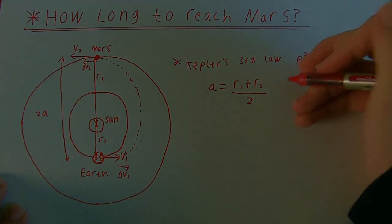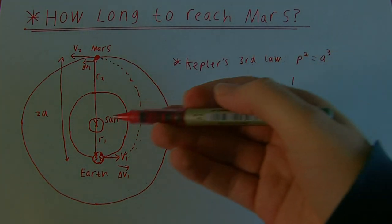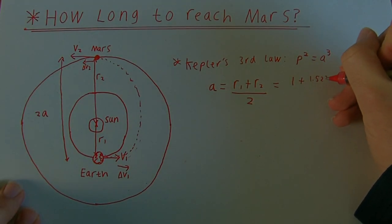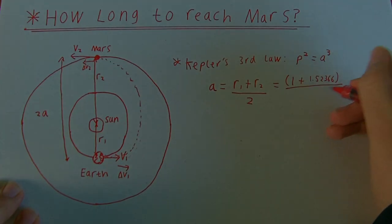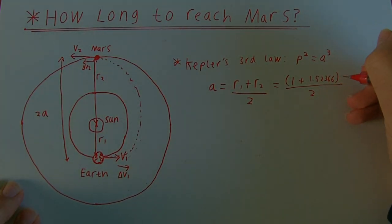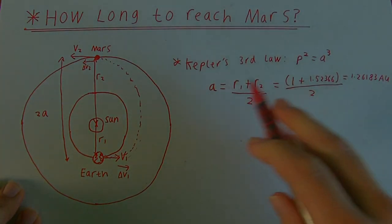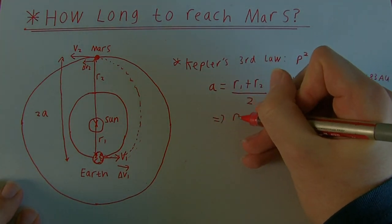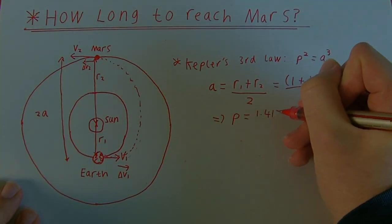Remember this is measured in astronomical units. The distance between the Sun and the Earth is 1 astronomical unit, plus 1.52366 astronomical units — the distance between the Sun and Mars — divided by 2, which gives us 1.26183 astronomical units. Now that we know A, we can substitute it into Kepler's Third Law and take the square root, which tells us the period is 1.417 years.